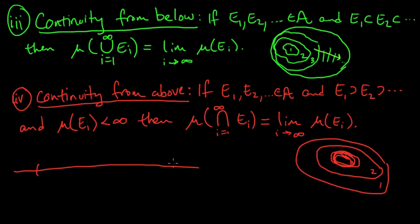say we take E₁ to be everything from 0 to infinity, the measure is infinite. So E₁ is everything from 0 to infinity, E₂ is everything from 1 to infinity, E₃ is everything from 2 to infinity, so in general, Eᵢ is the set from i to infinity. Now, the measure of each of these individually is infinite, but the intersection of all of them is the empty set, which is 0. The measure of the empty set is always 0. So that limit, the limit of a bunch of infinite things, is not 0. So this does not hold, in general, unless you assume that the measure of E₁ is finite.